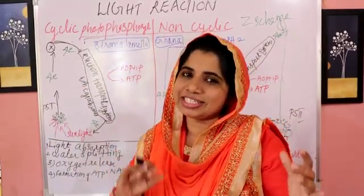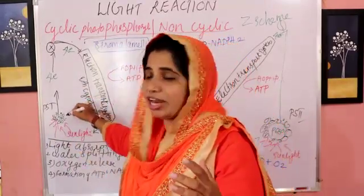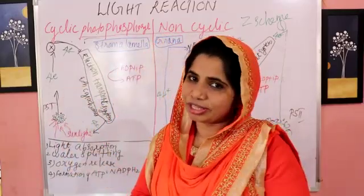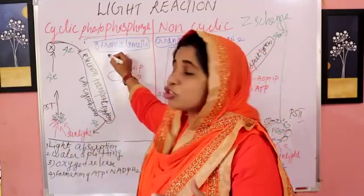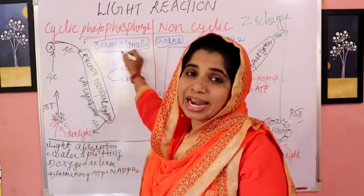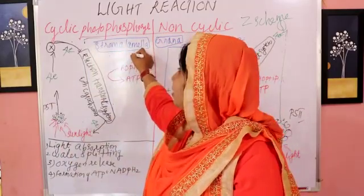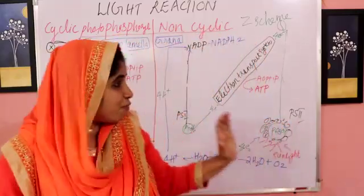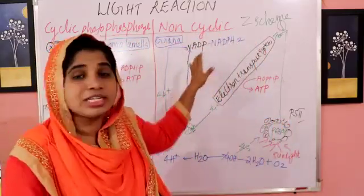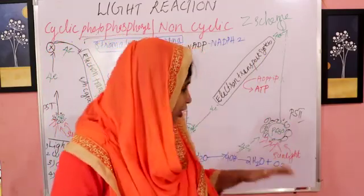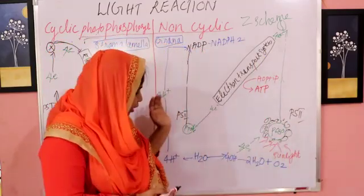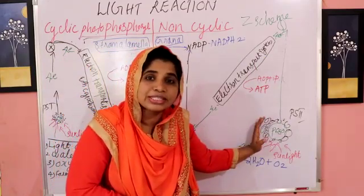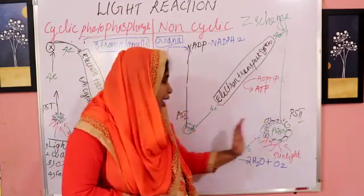The electron transport is cyclic — Photosystem 1 electron cycles through the stroma lamellae. This is cyclic photophosphorylation. Next is non-cyclic photophosphorylation. In the diagram, here are two photosystems: P700 and P680.